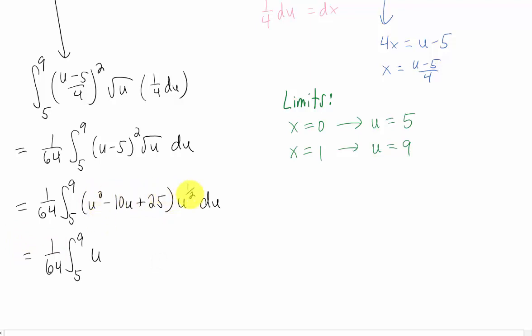We're going to get u to the 2 plus 1 half. That's going to be u to the 5 halves power. If we multiply u times u to the 1 half, we're going to get u to the 3 halves power.